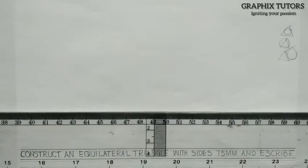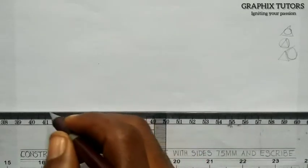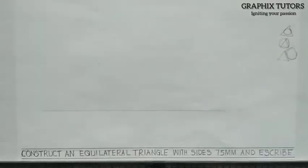Now, the question goes like this. It says construct an equilateral triangle with sides 75mm and escribe. Now, the first thing you do, you take your T-square, you draw a horizontal line, front line first of all.